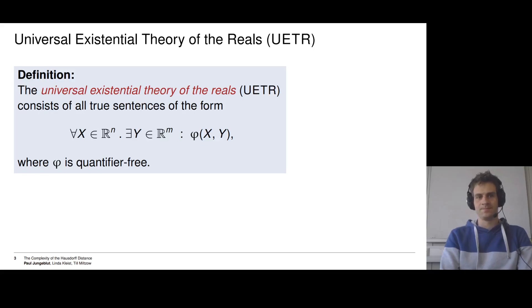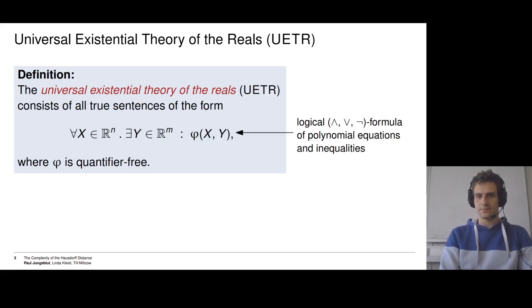The universal existential theory of the reals consists of all true sentences of this form: for all x in ℝⁿ, there is a y in ℝᵐ such that φ(x, y) is true, where this φ is a quantifier-free formula of polynomial equations and inequations, just like the ones we've seen on the slide before.